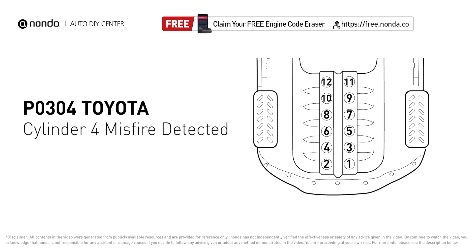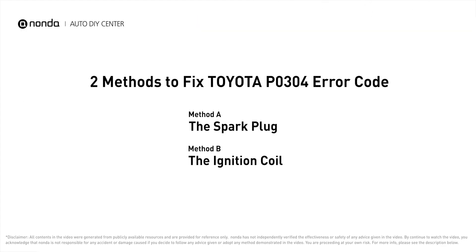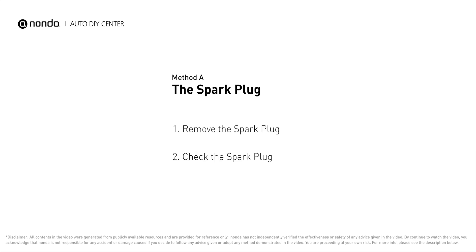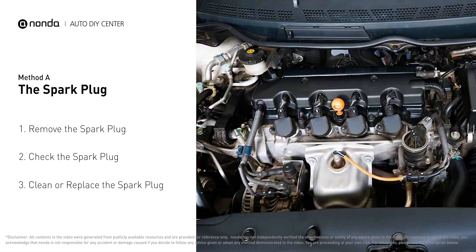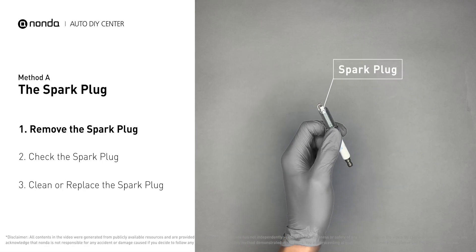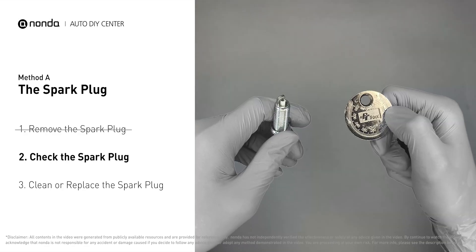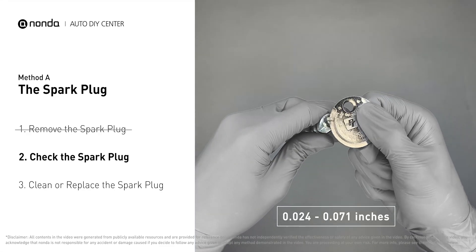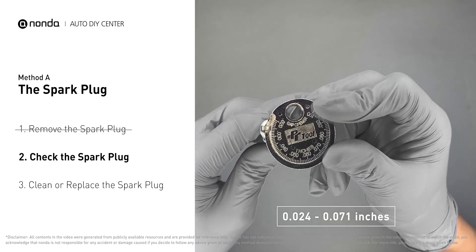Here are two of the most practical solutions to fix Toyota's P0304 error code. Method A: the spark plug. The spark plugs are located at the engine end of the wires, under the plug covers. First, carefully remove the spark plug. Use a spark plug gapper to check the spacing — normally the spacing should be between 0.024 to 0.071 inches.